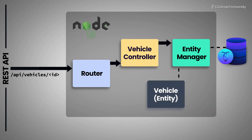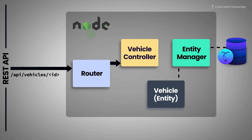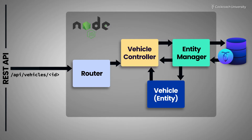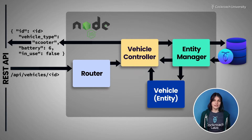Entities represent the actual data in the database table. Each vehicle entity has properties for the vehicle ID, vehicle type, current battery charge, and so on. The controller for this operation performs a database read that copies the requested data from the vehicles table into a vehicle entity object, which is passed back to the controller. The controller then serializes this object into a JSON record and passes it back to the frontend, which deserializes it and displays the vehicle's detail to the web application user.